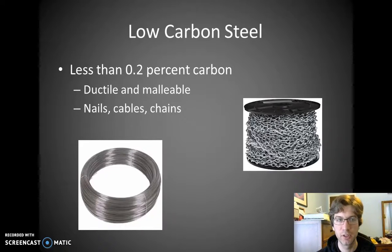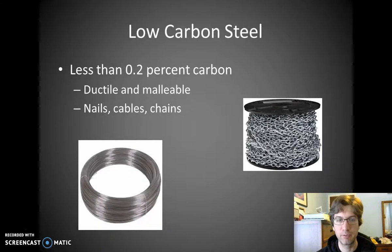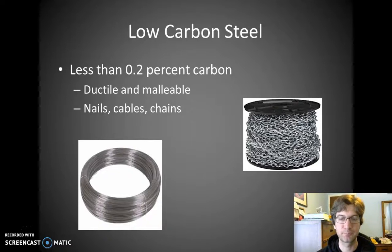You also have low carbon steels — less than 0.2 percent carbon. These are very malleable and ductile. Think of nails: when I hammer a nail, I need it to deform into the wood to grip it, kind of fan out and grab the wood. You can also think of cables, like bridge cables — they need to be very ductile so you can pull them into wires for suspension bridges. Or chains, where you need to bend the links to form the chain. Those are all examples of low carbon steels.